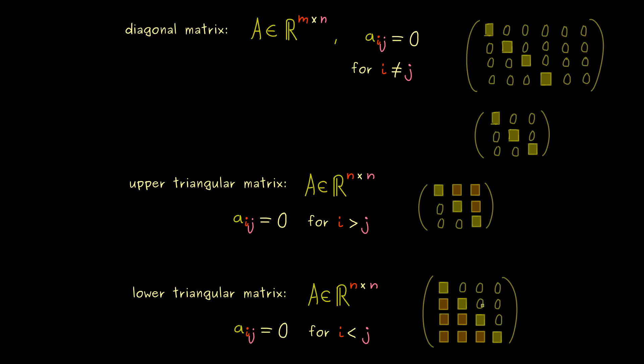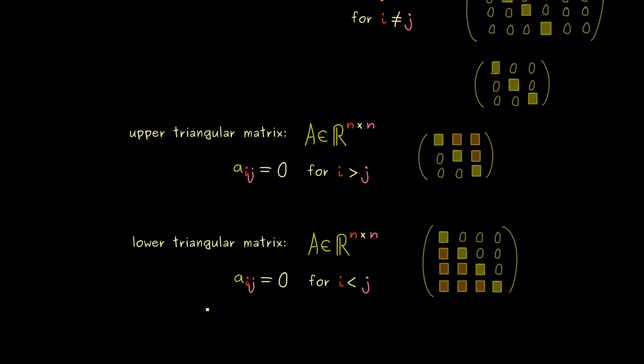Then of course the formula looks the same as before but now the column index should be greater than the row index. So for example at this position here we would have 2 for j and 1 for i. Then I want to show you 2 more special square matrices.